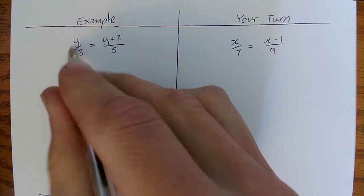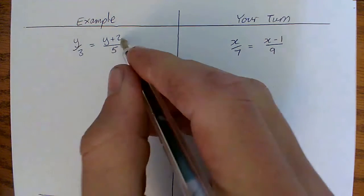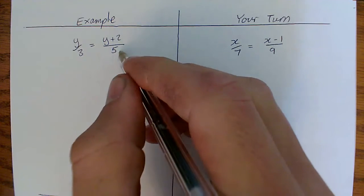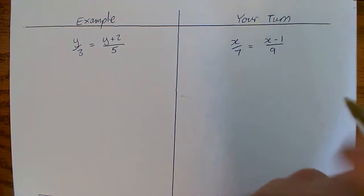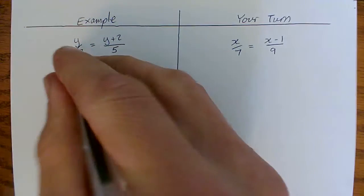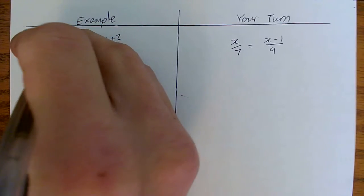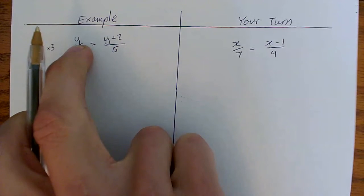So, same as before, this side we've got y divided by 3, this side we've got y plus 2 divided by 5. We're actually going to see a clever little trick, which is if I times this side here by 3, the divide by 3 will disappear.